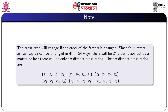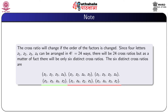The 6 distinct cross ratios are: the cross ratio of (z1, z2, z3, z4), (z1, z2, z4, z3), (z1, z3, z4, z2), (z1, z2, z3, z4) permuted, (z1, z4, z3, z2), and (z1, z3, z2, z4).